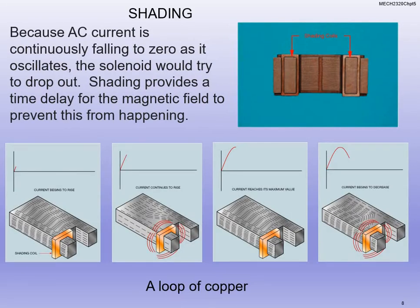We use shading coils in the AC piece. AC is constantly changing signals — plus, minus, plus, minus — and we don't want the solenoid to fall out. When current is on positive, the solenoid creates the magnetic field; it goes negative and changes the other way. We use shading so that with AC it still remains constantly on. As current begins to rise, the shading coil creates that magnetic field. When the current reaches its maximum, it continues to kick on the field. We change the field in the other direction — changing the polarity — so that the contactor can stay closed as AC changes polarity.